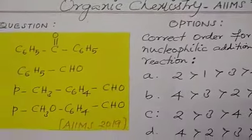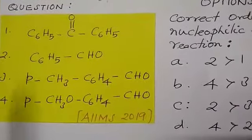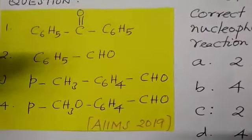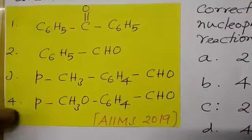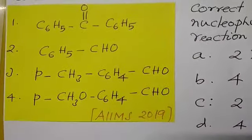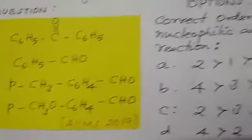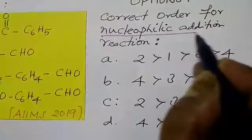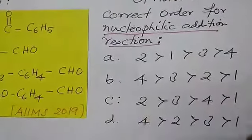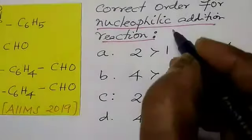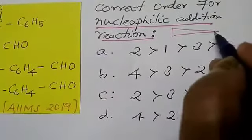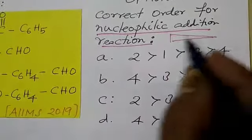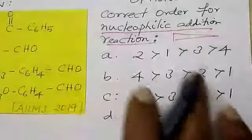Let us see the first question. Here in AIIMS, what is given is 4 different compounds: diphenyl ketone, benzaldehyde, and substituted ketones — all degrees are available. The question asks for the correct order for the nucleophilic addition reaction. You have to arrange them in order, and that is a decreasing order of nucleophilic addition.